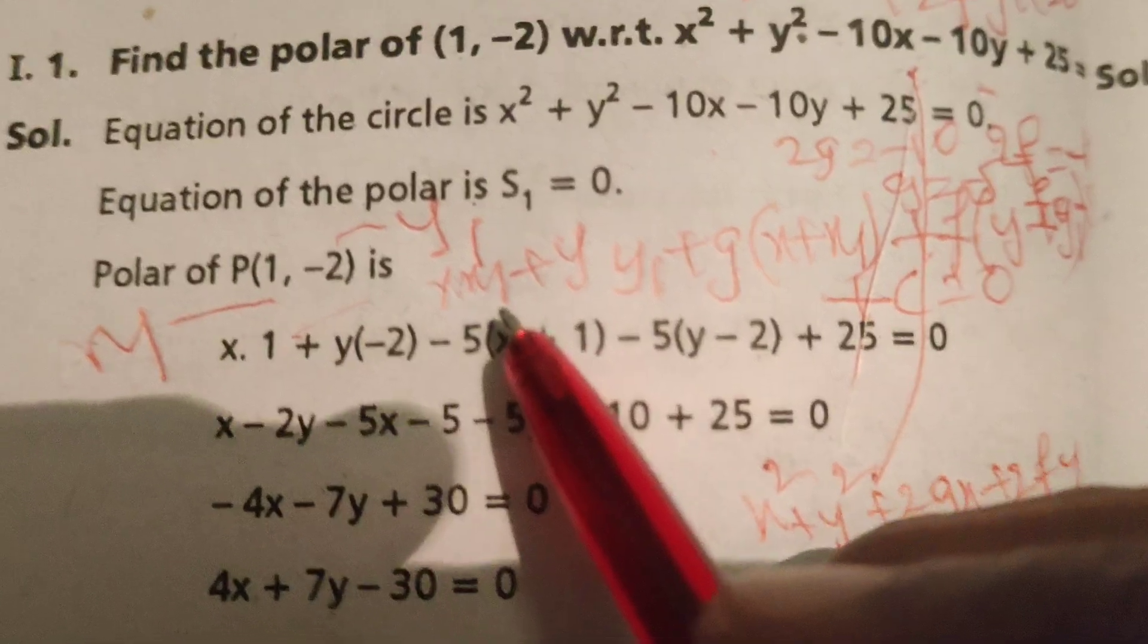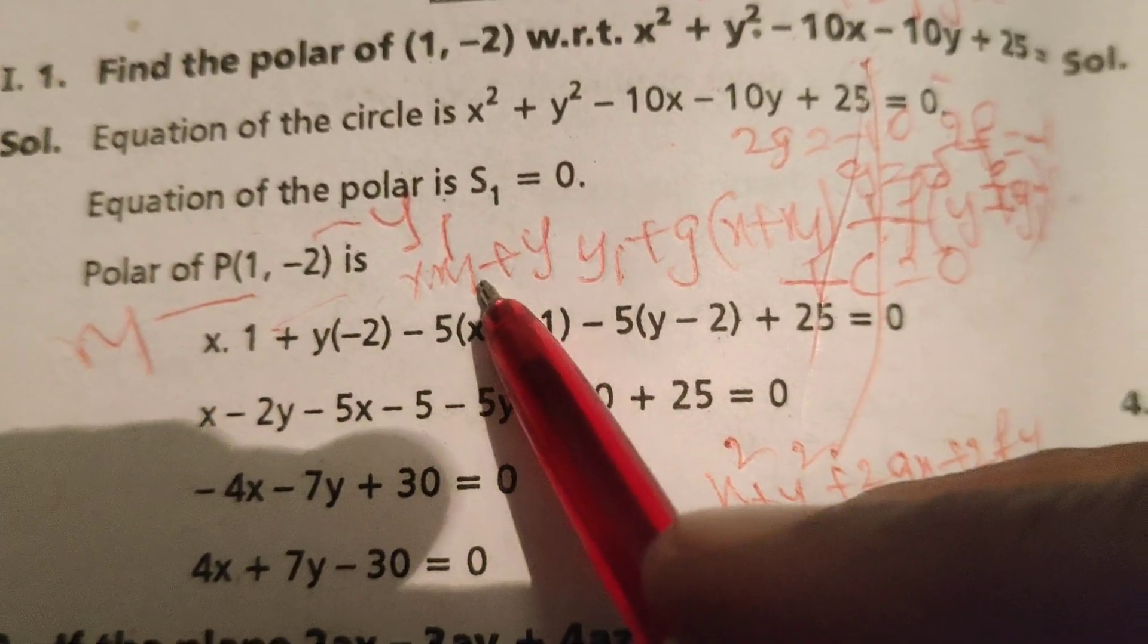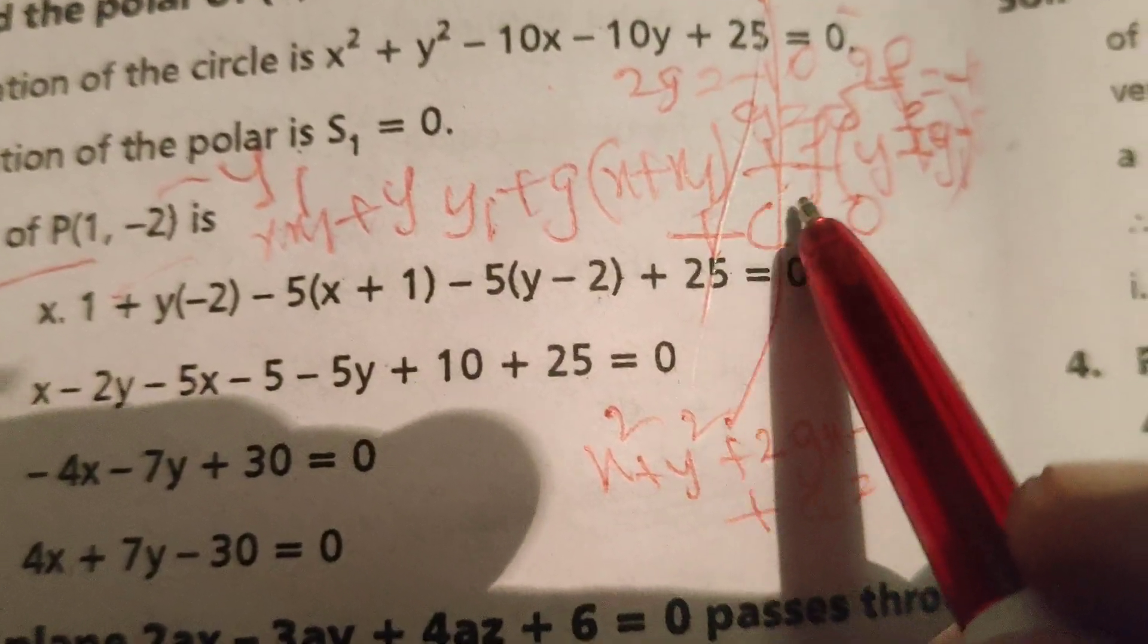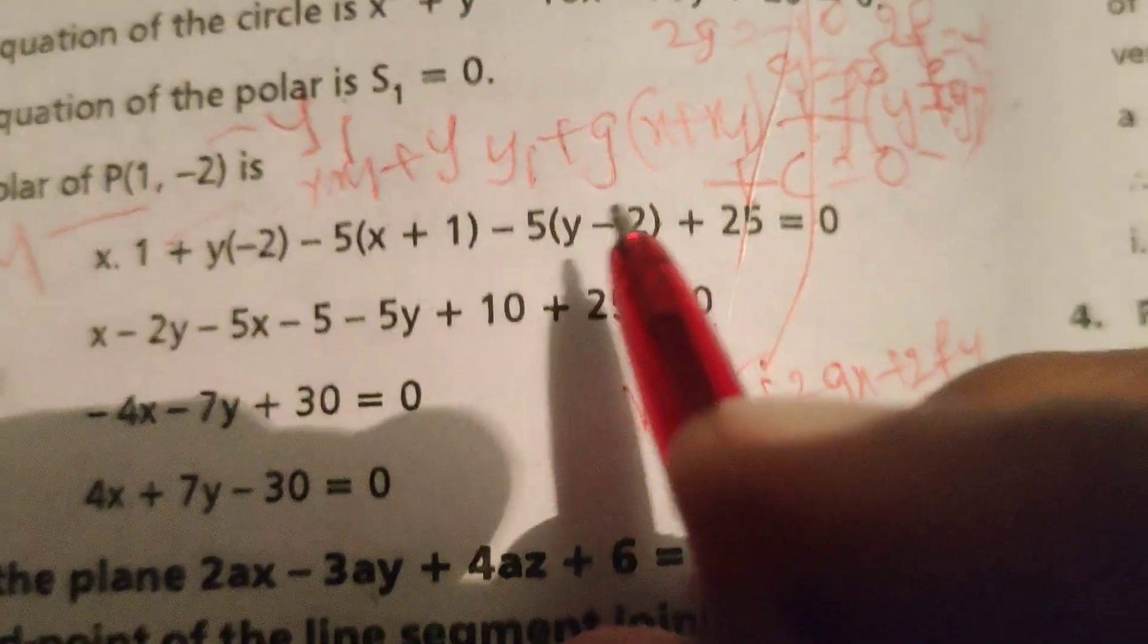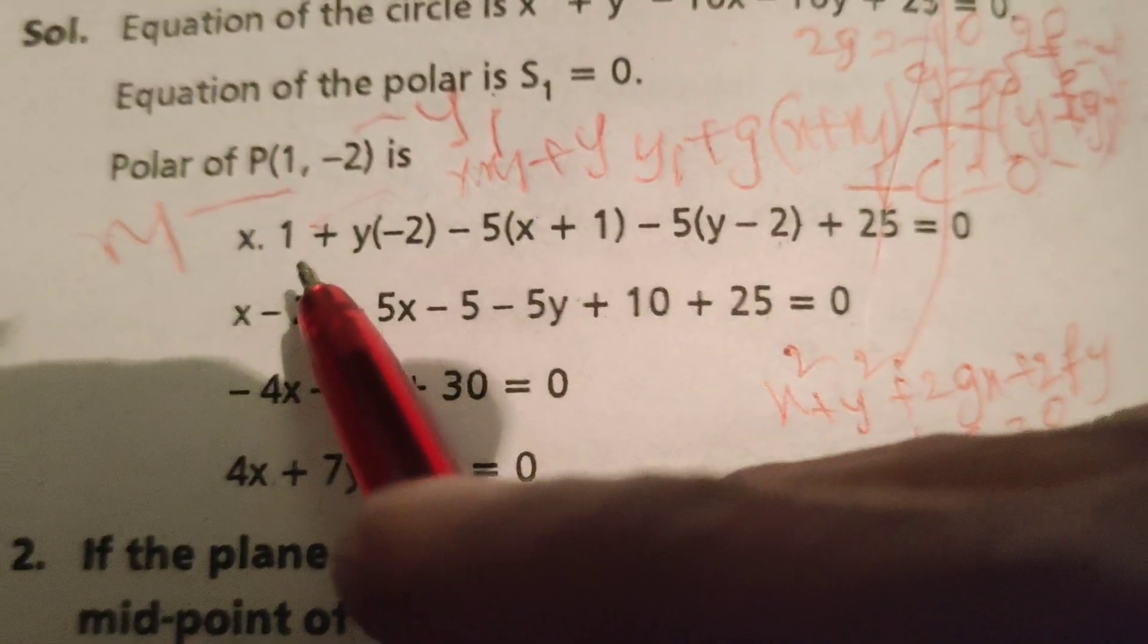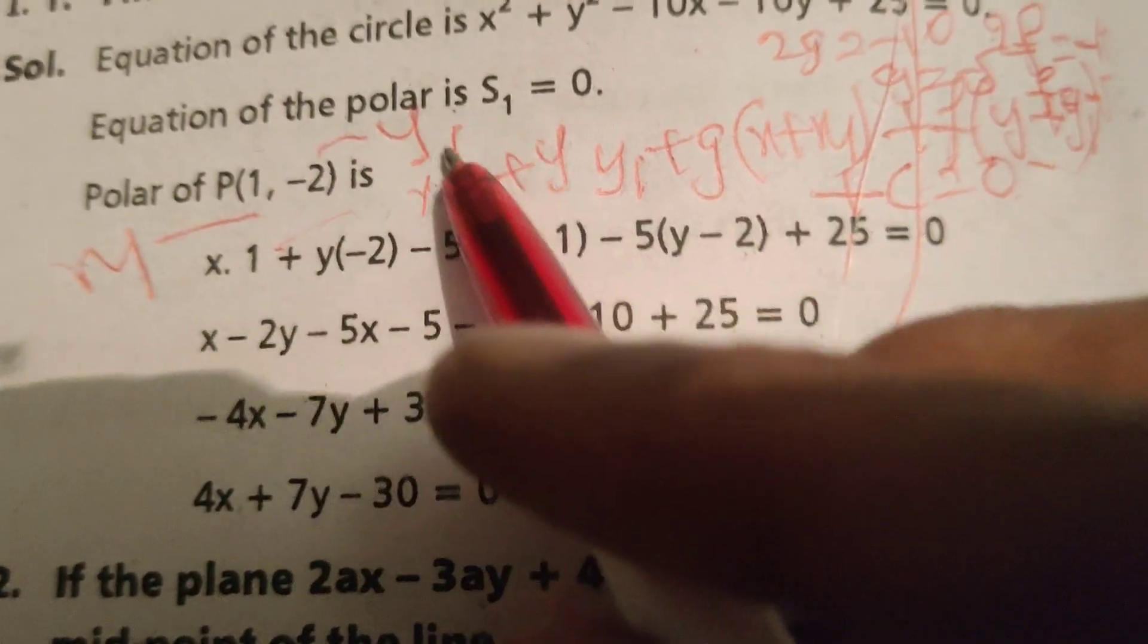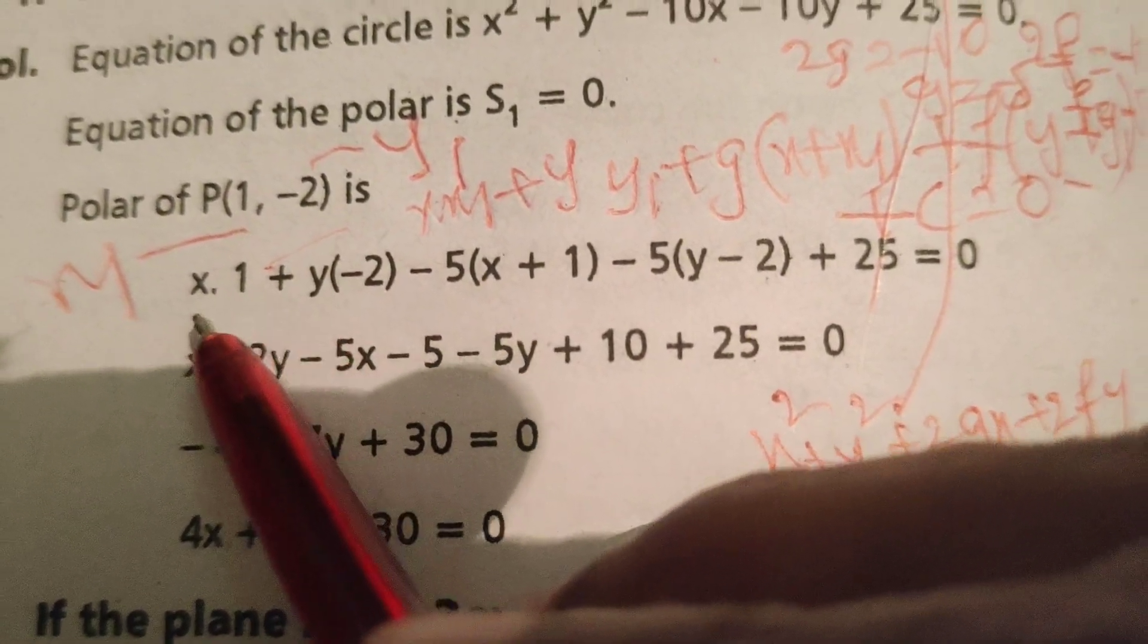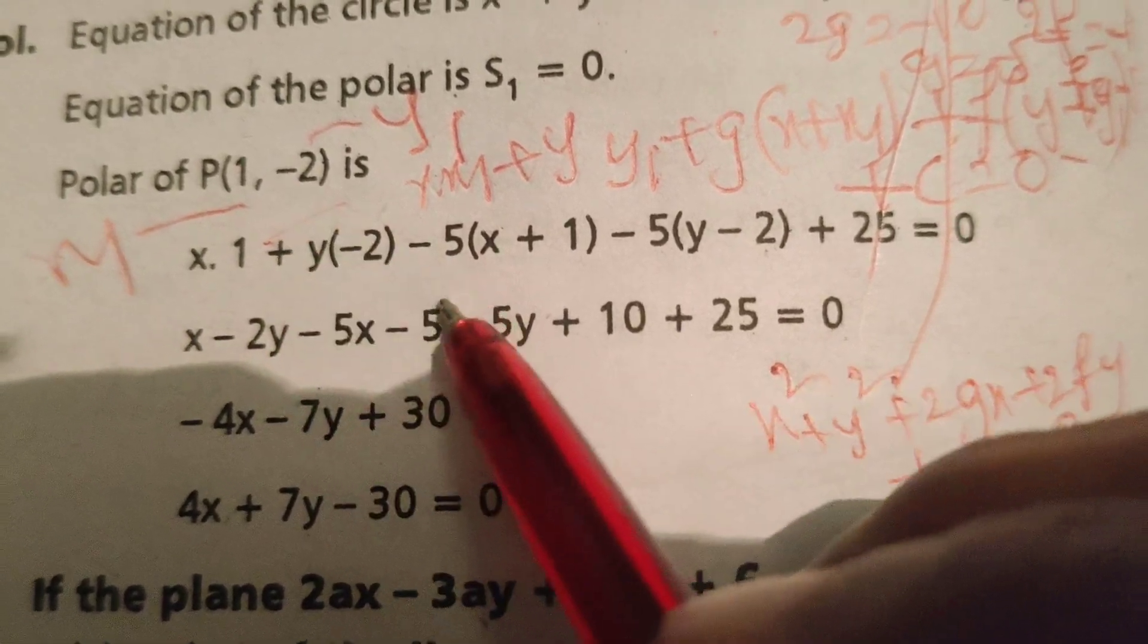The equation of polar with respect to the point is xx₁ + yy₁ + g(x + x₁) + f(y + y₁) + c = 0. Now with x₁ = 1 and y₁ = -2, we have x(1) + y(-2)...